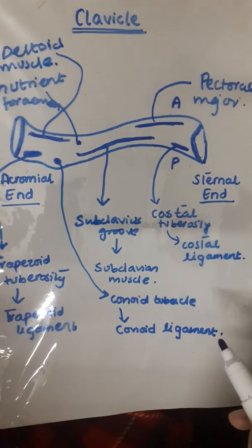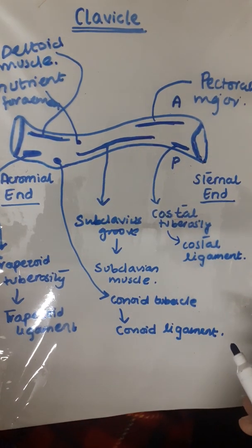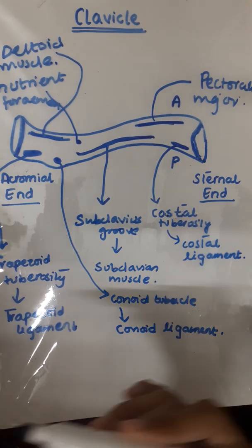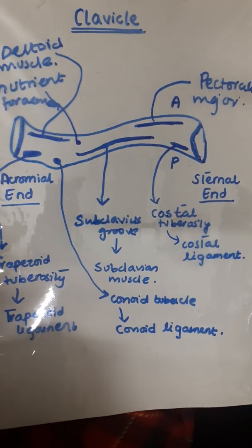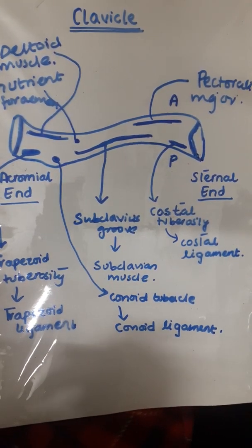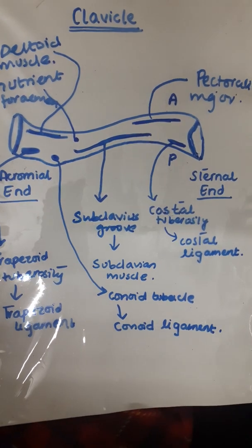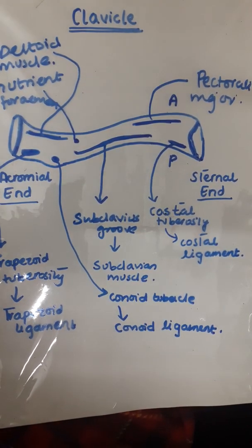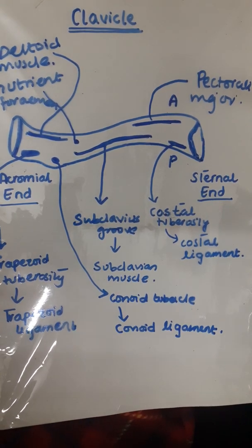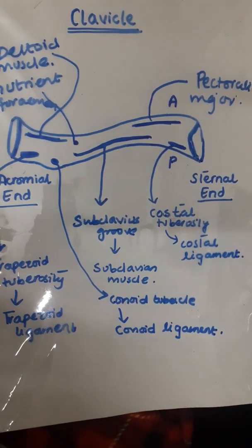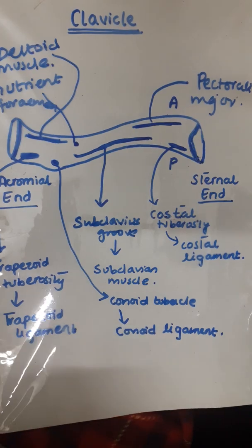The clavicle is the most commonly fractured bone in our body. It is also the first bone to begin ossification, and it is subcutaneous and easily palpable along its entire length.